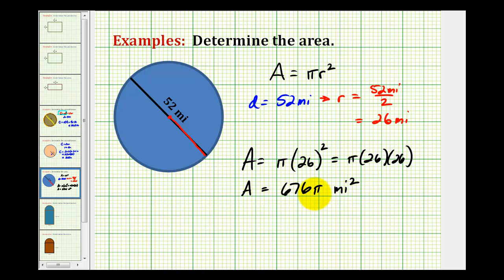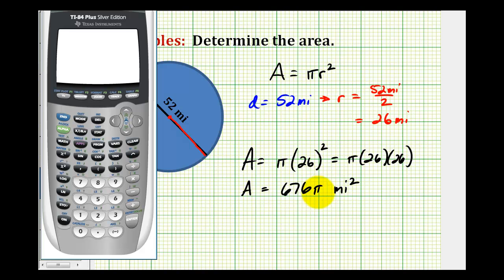And then we can approximate this by using our calculator. And if you don't have a pi key on your calculator, often 3.14 is used to approximate pi. I'm going to go ahead and use the pi key on the calculator by pressing second, and then the caret here, which is the exponent key. Notice how the pi appears. Press enter. So it's approximately 2,123.72 square miles.